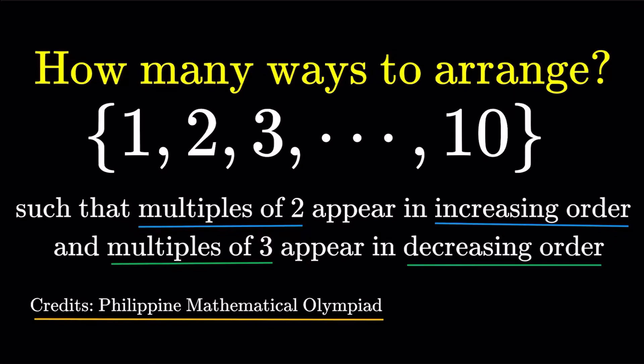Hello, hello, it's Stumplet here. Here's an item on combinatorics. How many ways are there to arrange the first 10 positive integers such that the multiples of 2 appear in increasing order, and the multiples of 3 appear in decreasing order? Credits to the Philippine Mathematical Olympiad for this item.